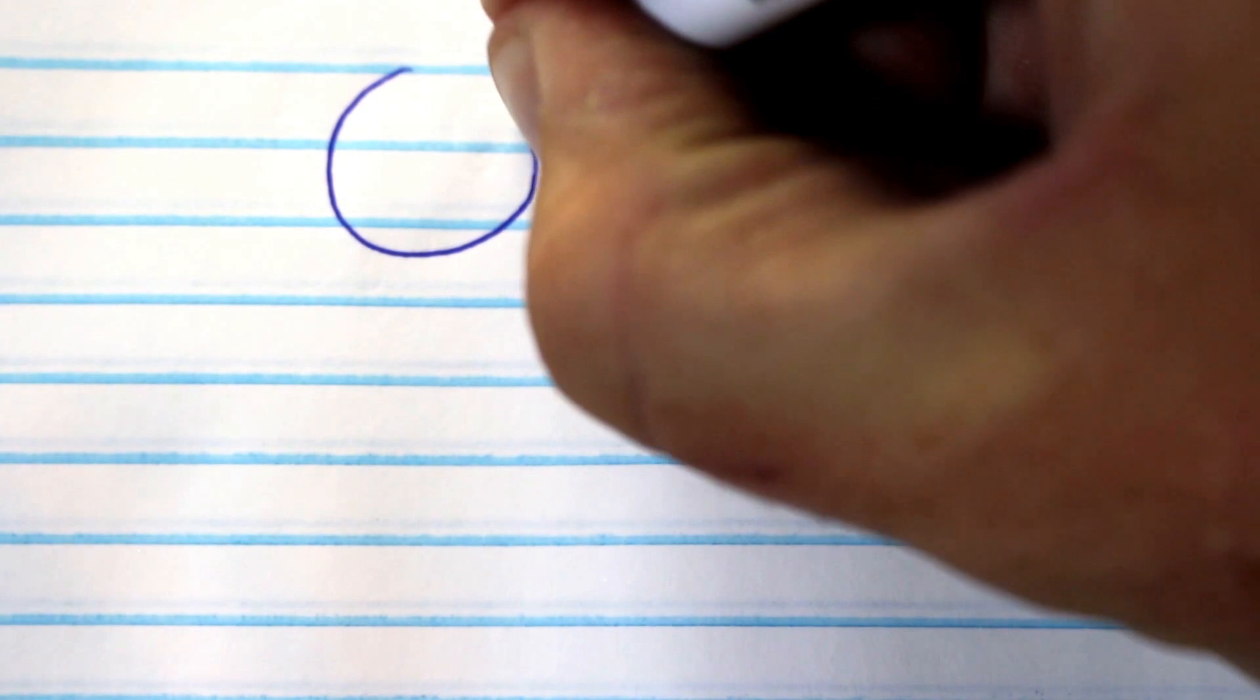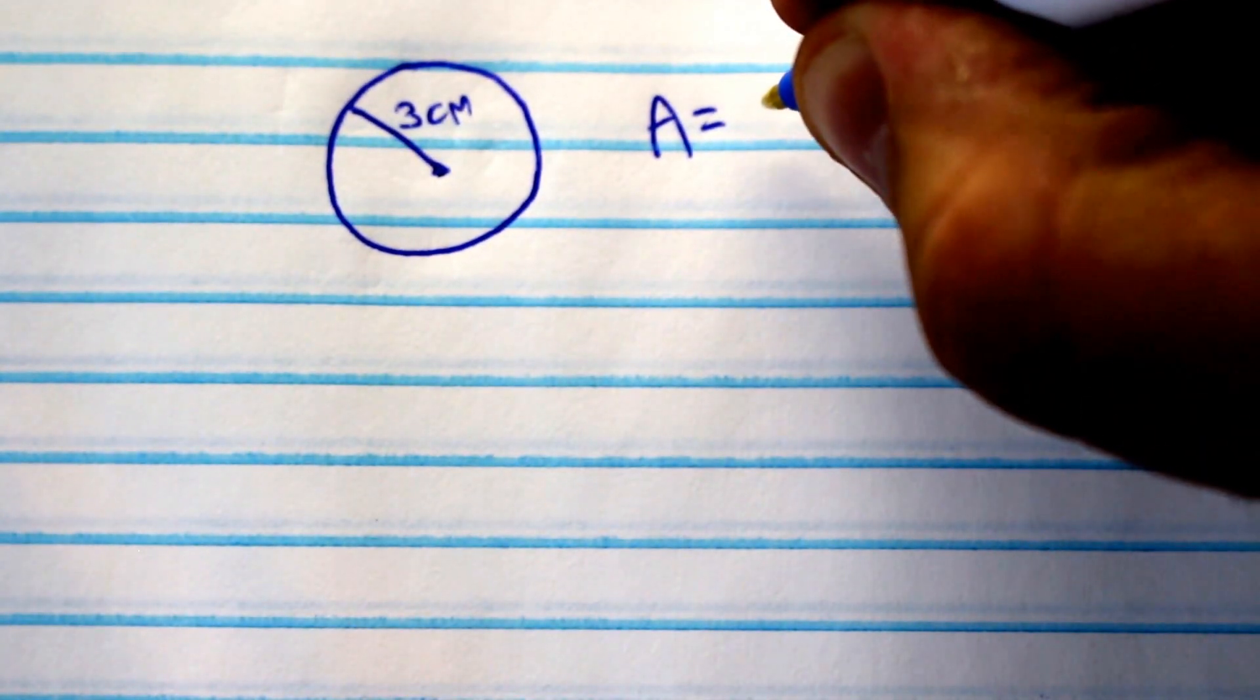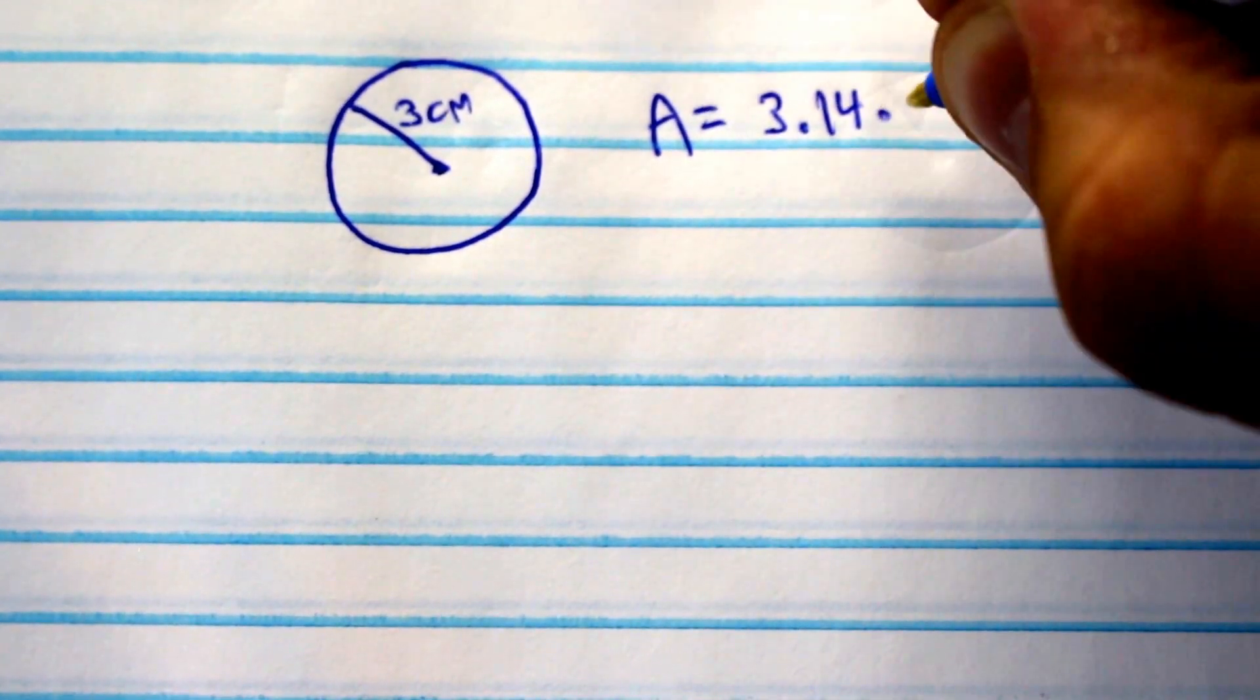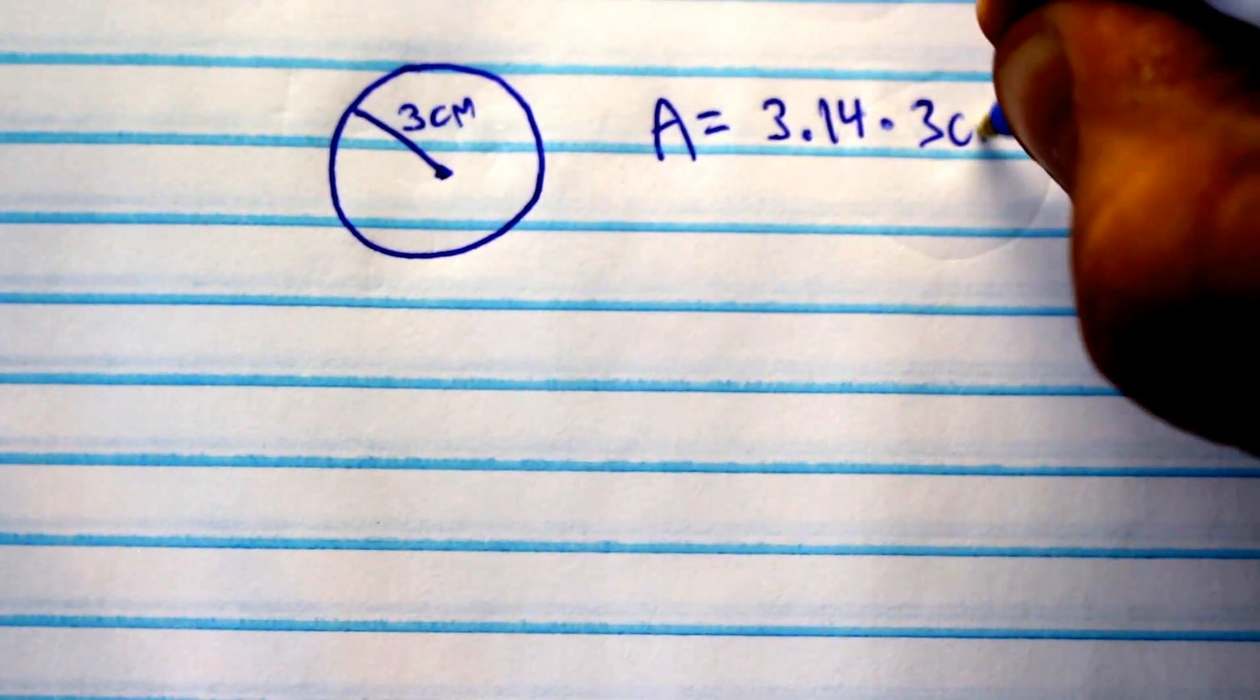Let's look at an example. Let's say you're given this circle, and it says your radius is equal to 3 centimeters. So you would take area equals pi, 3.14, times the radius, 3 centimeters.